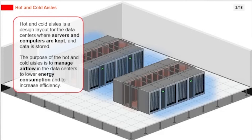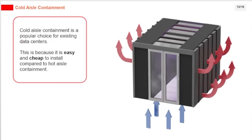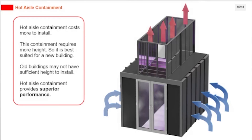Hot and cold aisles is a design layout for data centers where servers and computers are kept and data is stored. The purpose is to manage airflow in data centers to lower energy consumption and increase efficiency. Cold aisle containment is a popular choice for existing data centers as it is easy and cheap to install. Hot aisle containment costs more and requires more height, so it is best suited for new buildings, but provides superior performance.